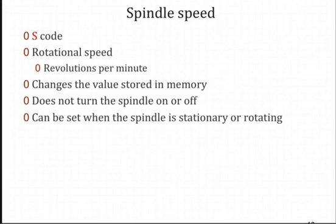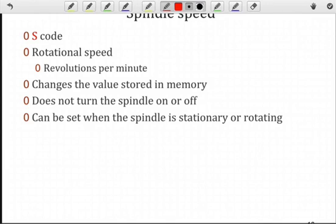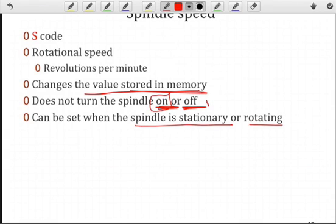Spindle speed is similar, only we're specifying revolutions per minute. So that would be the actual rotation of the spindle. It will change the value that's stored in memory. Note that it will not turn the spindle on or off. It will only be used as the control value for the speed at which it should rotate. So you can set that speed when it's stationary or when it's rotating. Usually it's good practice to set that spindle speed initially in your program without the spindle rotating and then turn the spindle on when necessary and off when necessary.